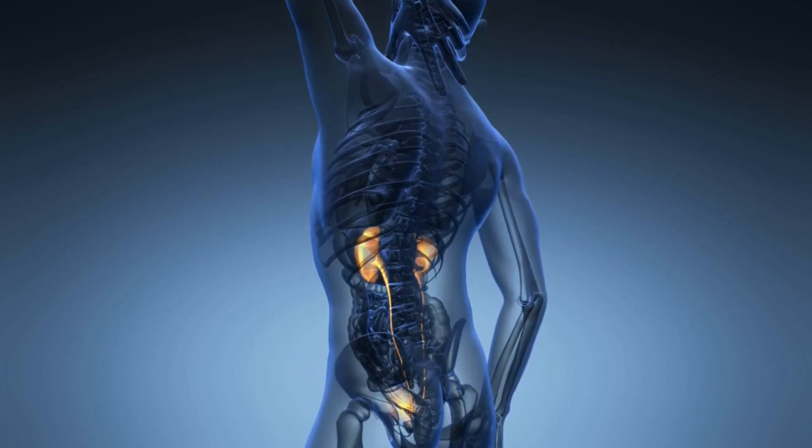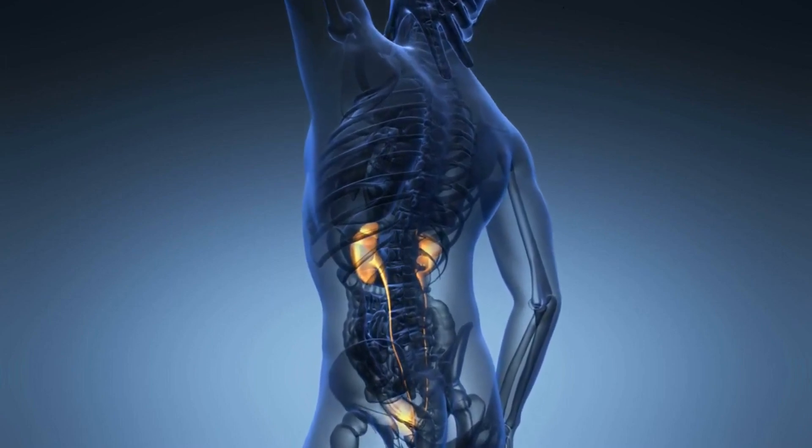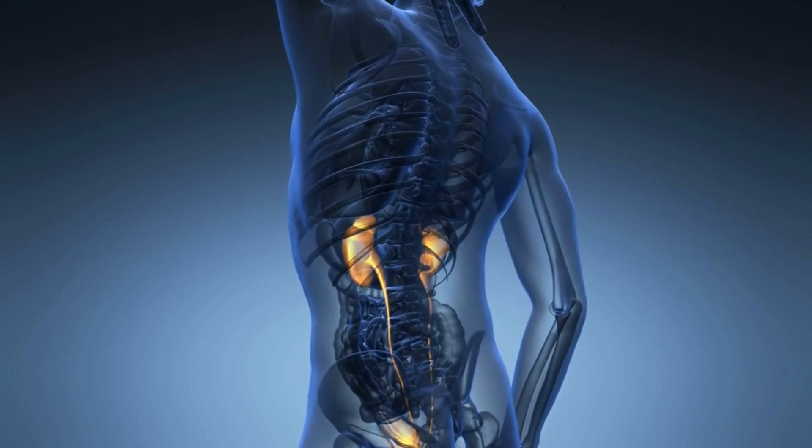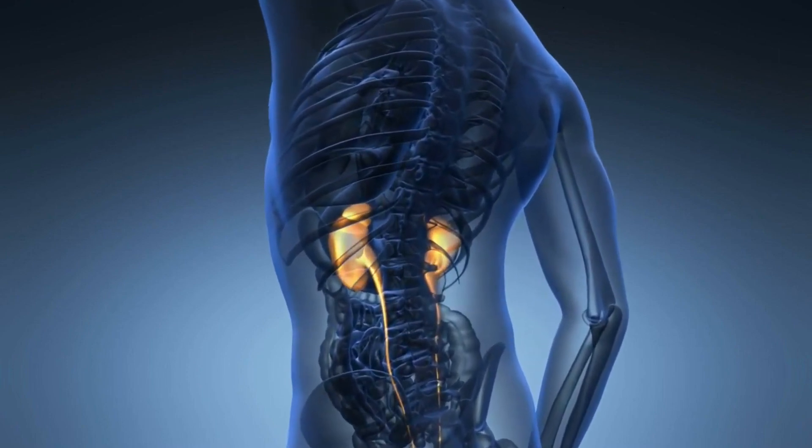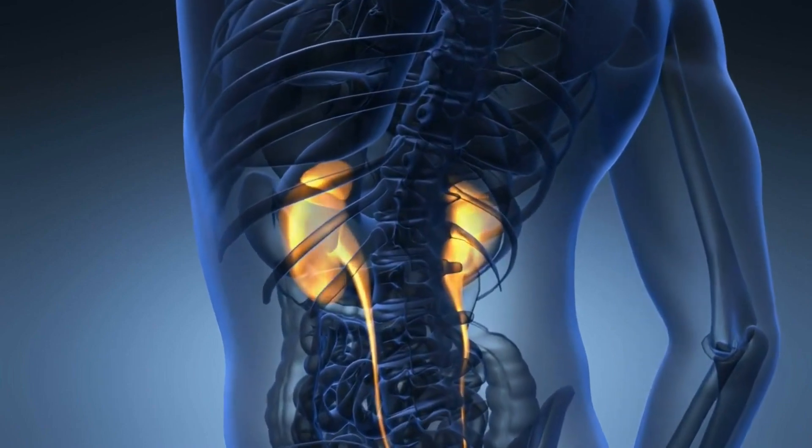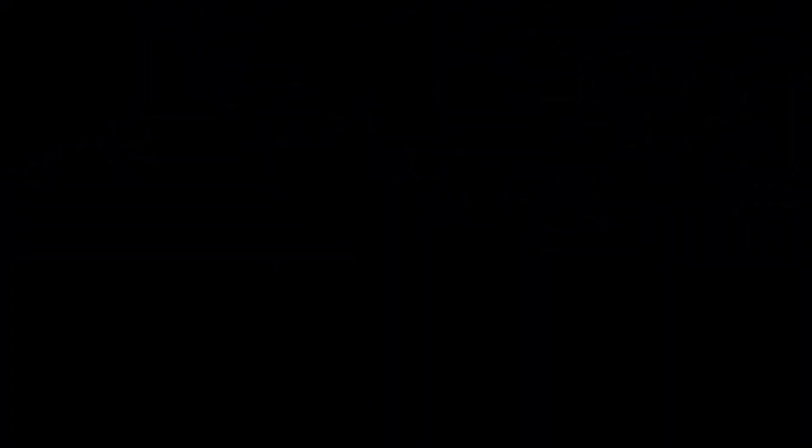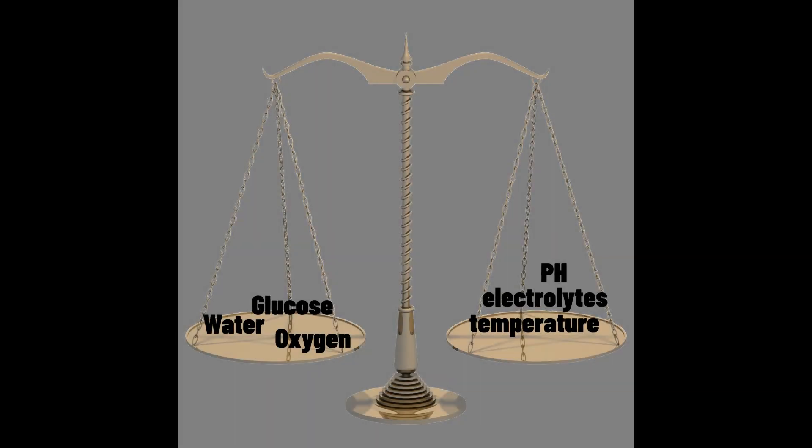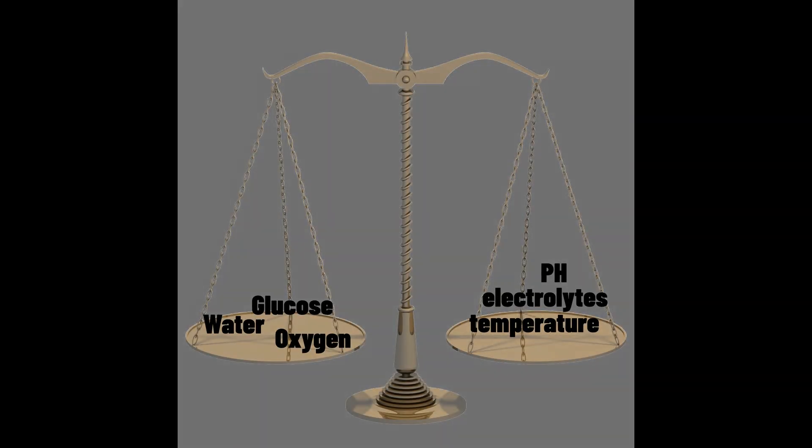If not removed, these waste products would slowly build up and eventually kill us. The renal system is a vital player in controlling ingested substances. Things the body cannot use need to be removed, and the balance of other substances needs to be maintained. This is known as homeostasis, the body maintaining the correct equilibrium of what is needed to maintain normal life functions.